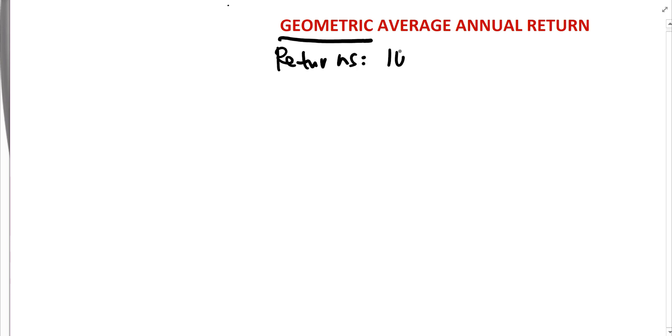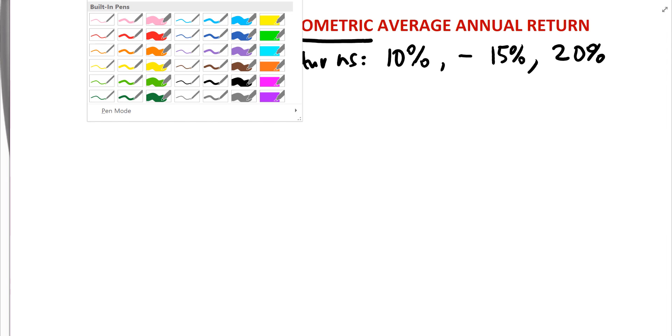Let's say we have a 10% return, then we have a negative 15% return, and the third one is 20%. Okay, so this is what we are given.